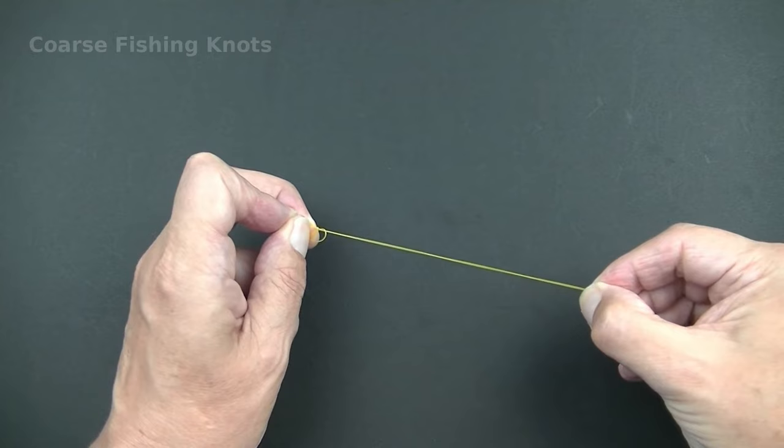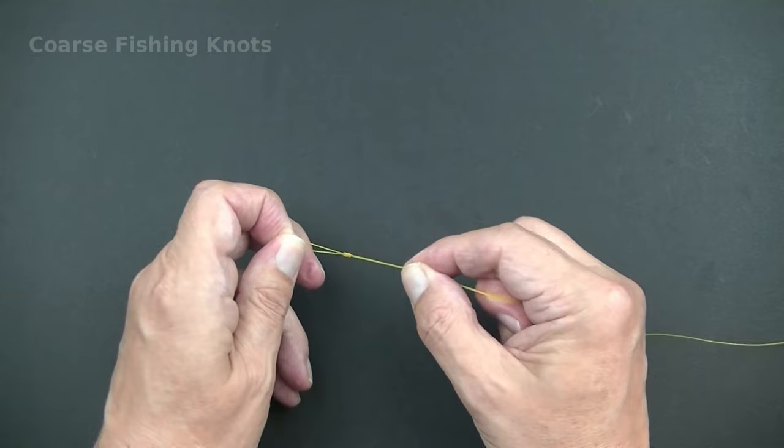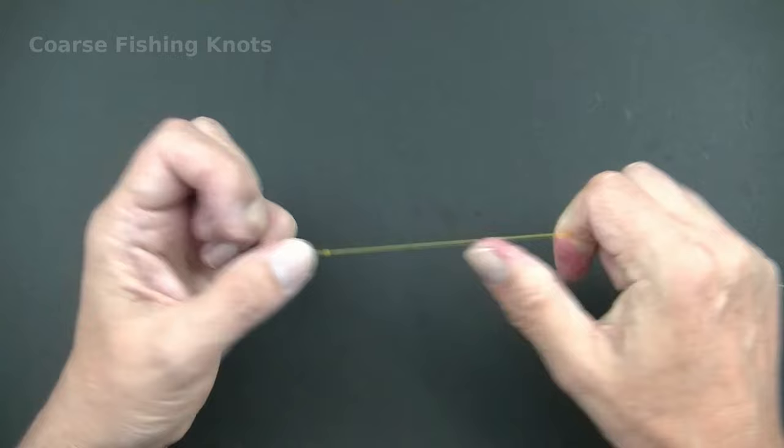Hold the knot and slide it down if you want a smaller loop. Wet the line with water or saliva and pull to tighten the knot.